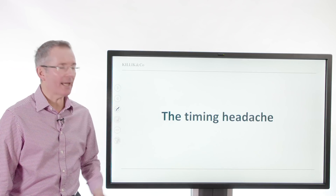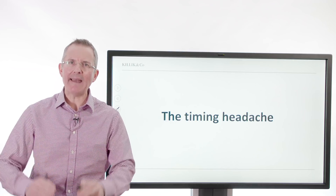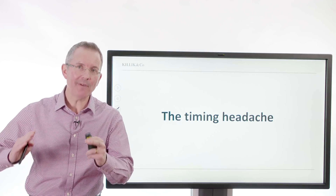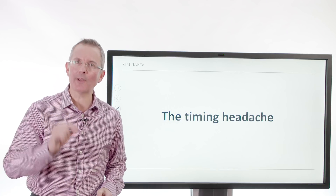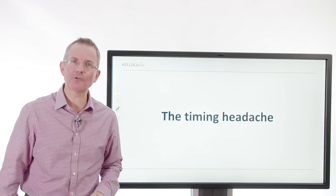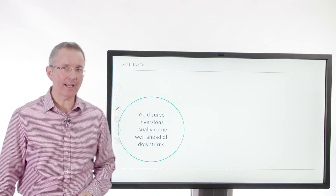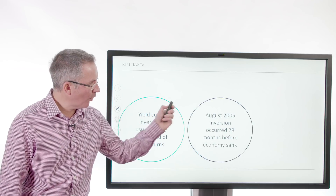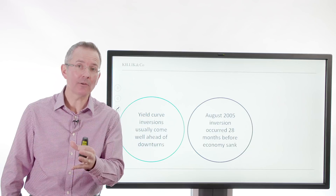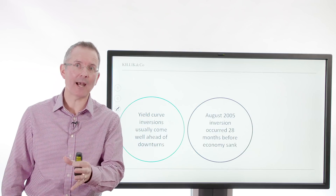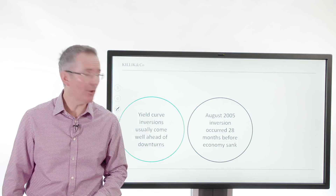The timing headache is this: some people would say you don't get an immediate effect. When yield curves invert and you look backwards, you don't see an immediate recession. That's a problem with interpreting this as a definite signal of trouble ahead. There is a bit of a timing headache — inversions usually come well ahead of downturns. In August 2005, there was a big inversion that did predate the big downturn — the financial crisis and so on — but it took a while to come through.